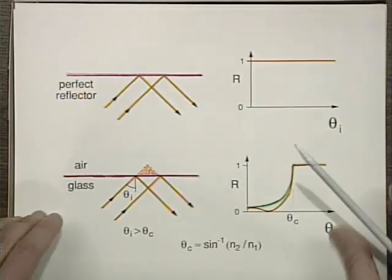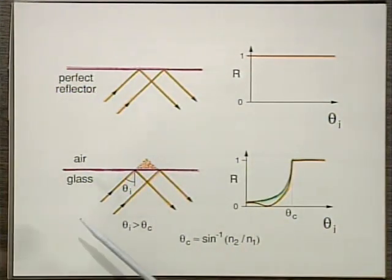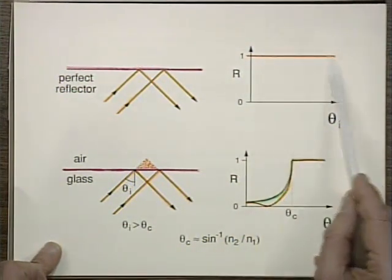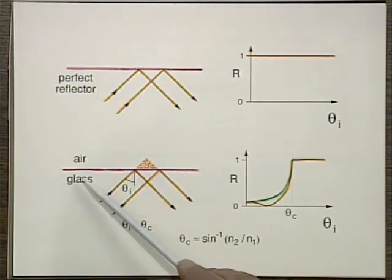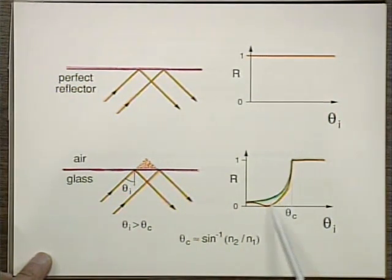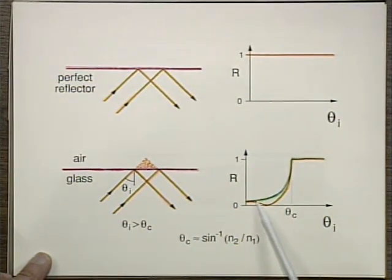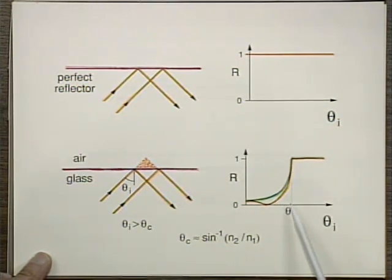Just to remind you of what's going on: with a perfect mirror, essentially close to 100% of the light gets reflected at any angle of incidence. But with a glass-air interface, coming from the glass side, the reflectivity depends on polarization. It starts at about 4% — for one polarization it goes through zero at the Brewster angle and then rises at theta critical to 100%. For the other polarization it doesn't go to zero but also rises to 100% at theta critical. So it doesn't matter which polarization — both reach 100% at and beyond theta critical.